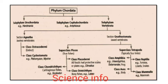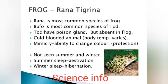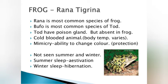Superclass Tetrapoda contains class Amphibia, Aves, Reptilia, and Mammalia. The classification of the frog: kingdom Animalia, phylum Chordata, subphylum Vertebrata, section Gnathostomata, superclass Tetrapoda, class Amphibia, order Anura, family Ranidae, genus Rana, and species tigrina. Rana is the most common species of frog; Bufo is a common species of toads.